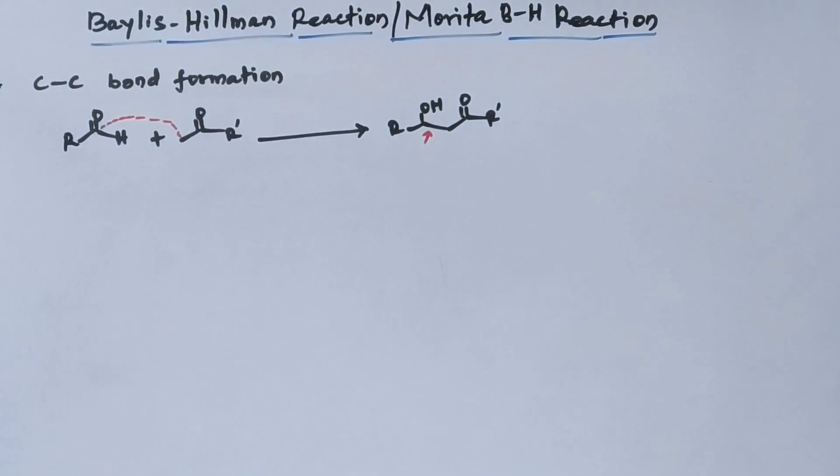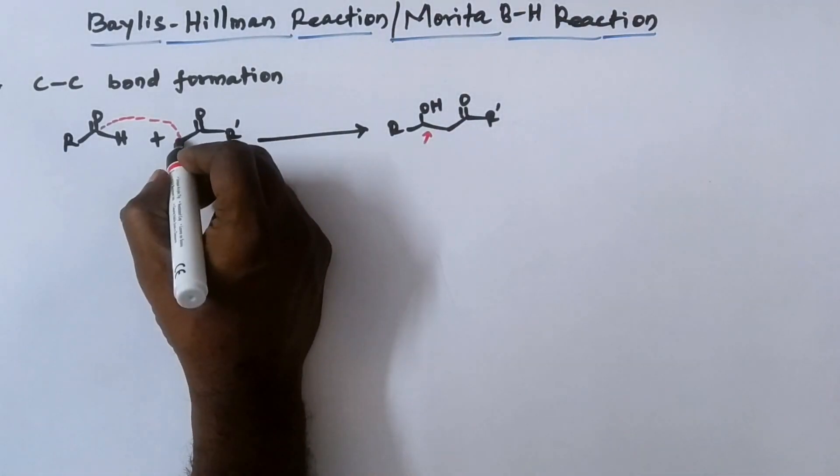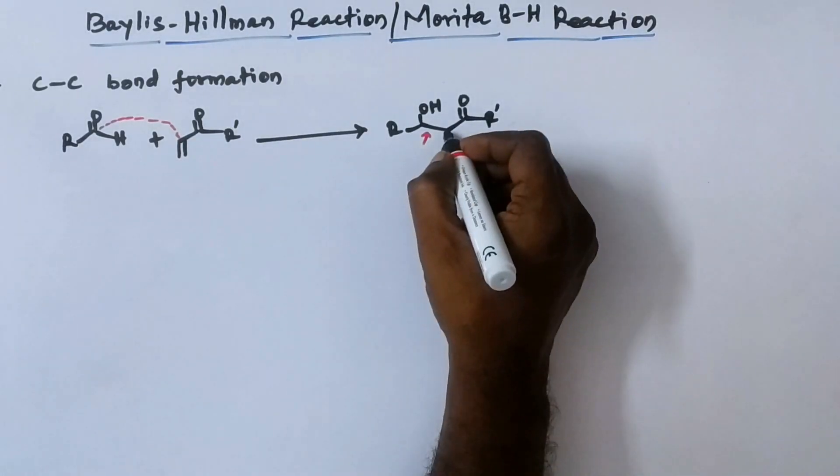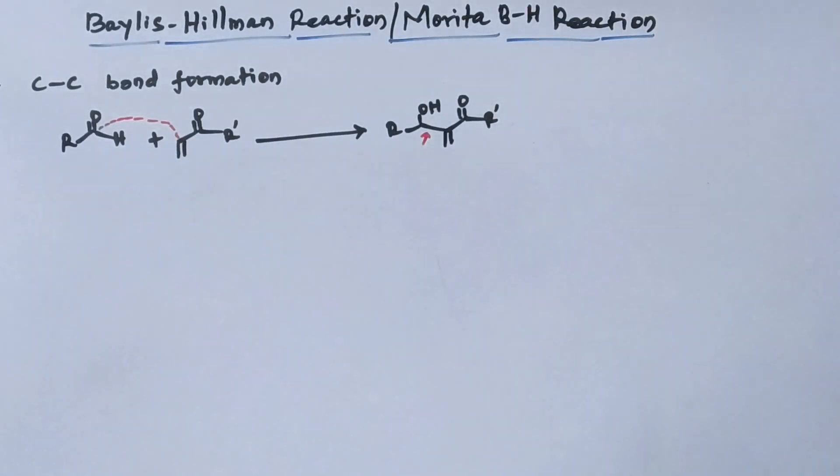But here we are studying about Baylis-Hillman reaction. Please listen. Put a double bond here at the enolizable carbon and the same double bond here also in the same enolizable carbon. This is Baylis-Hillman reaction. It is reminiscent of aldol reaction.